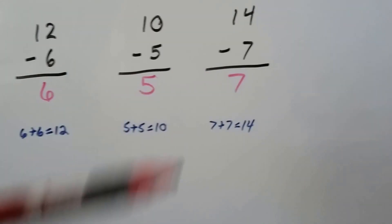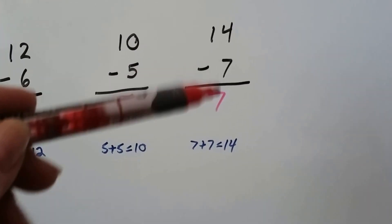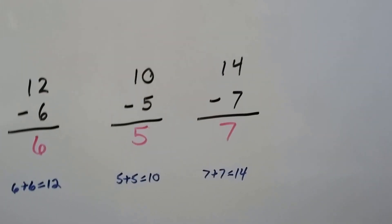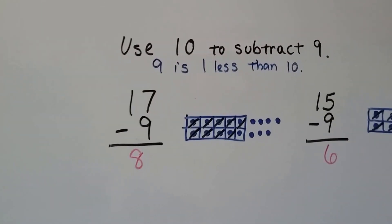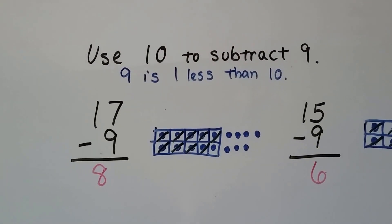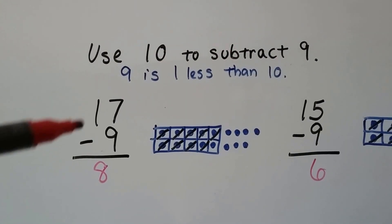And 7 plus 7 is 14, so the missing double is a 7. We can use 10 or a 10 frame to subtract 9. Just remember, 9 is 1 less than 10.